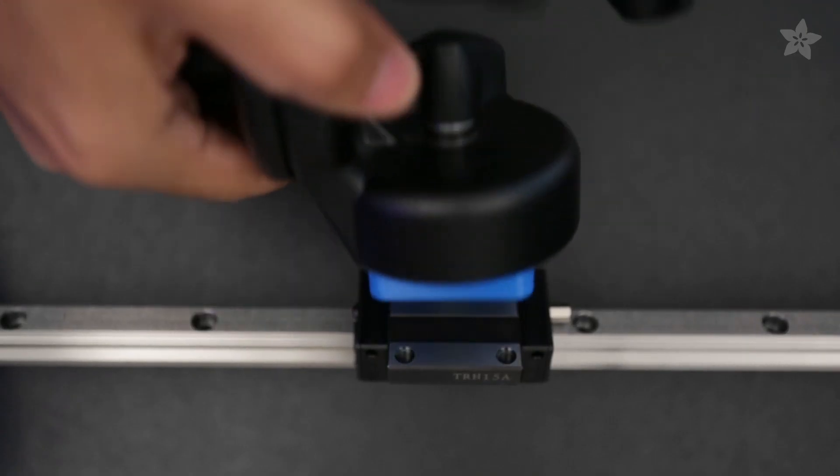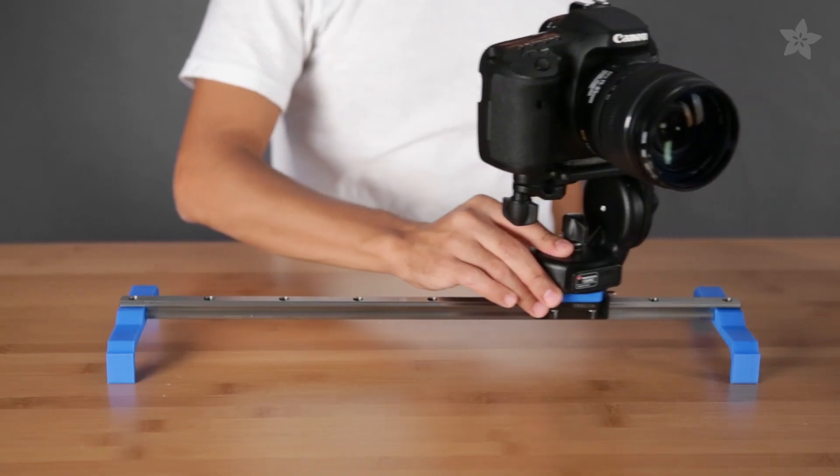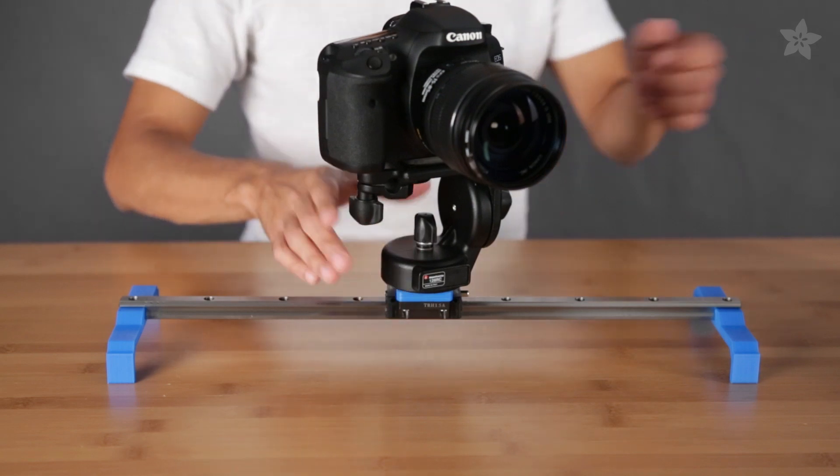This 19 inch slide railing is made of stainless steel and supports up to five pounds. With this simple build you can get high quality slider shots for a relatively low price.